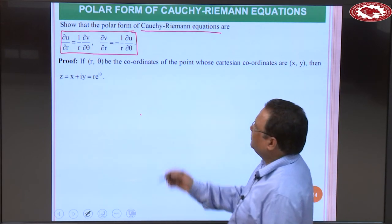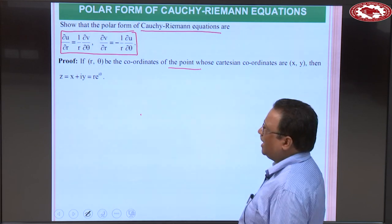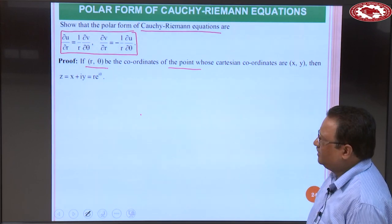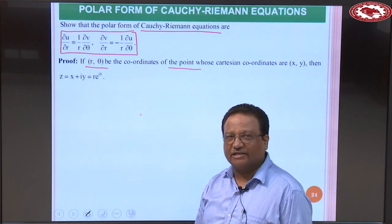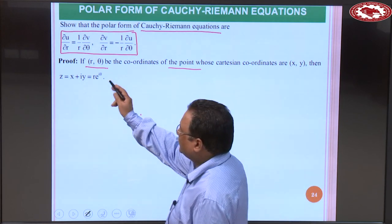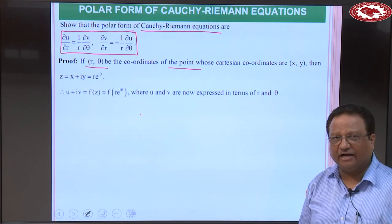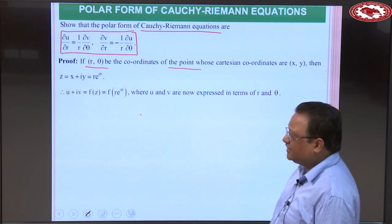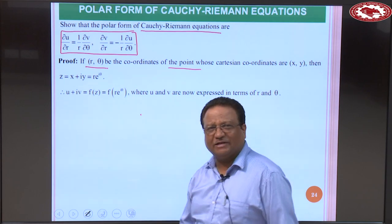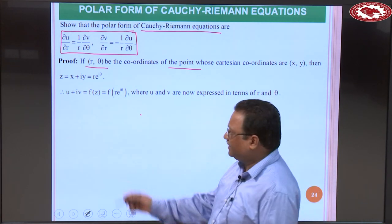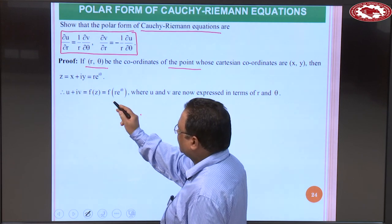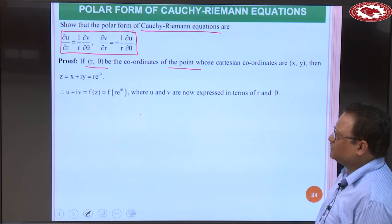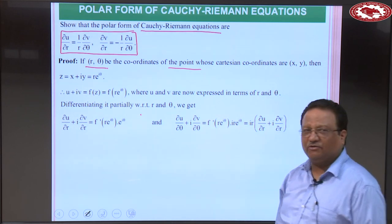If (r, θ) are the coordinates of a point whose Cartesian coordinates are (x, y), then z = x + iy can be written as r·e^(iθ). Therefore u + iv = f(z) = f(r·e^(iθ)), where u and v are now expressed in terms of r and θ. Differentiating partially with respect to r and θ gives us the required relations.